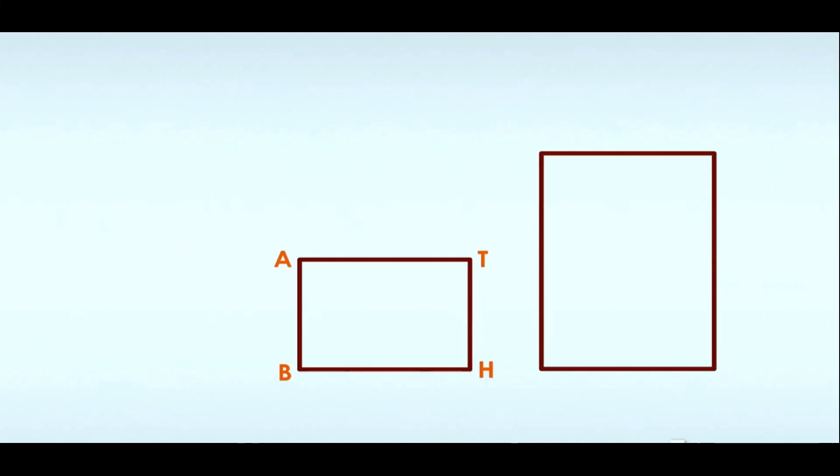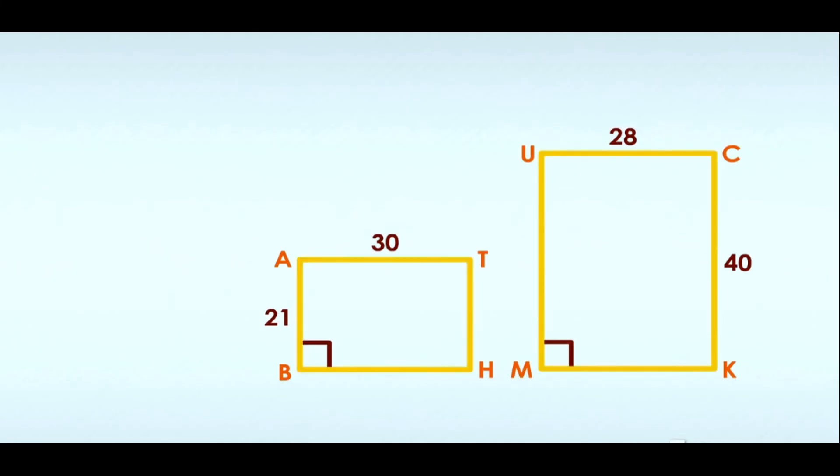Time for an example. Here are two rectangles spaced far apart and in different orientations. Rectangle BATH has long sides of 30 yards and short sides of 21 yards. You need not worry about corresponding interior angles—they are all 90 degrees. Notice rectangle MUCK is bigger than BATH, which means the two rectangles cannot be congruent. Because they are oriented in different ways, you cannot easily tell if they are similar. What will you do?